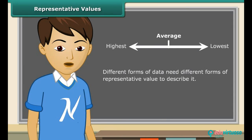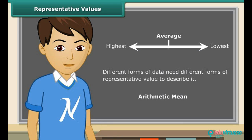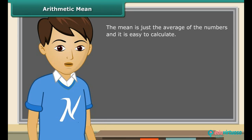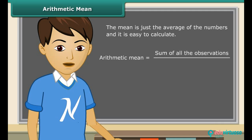Different forms of data need different forms of representative value to describe it. One of these representative values is the arithmetic mean. The mean is just the average of the numbers and it's easy to calculate. Basically, mean is equal to the sum of all the observations divided by number of observations.